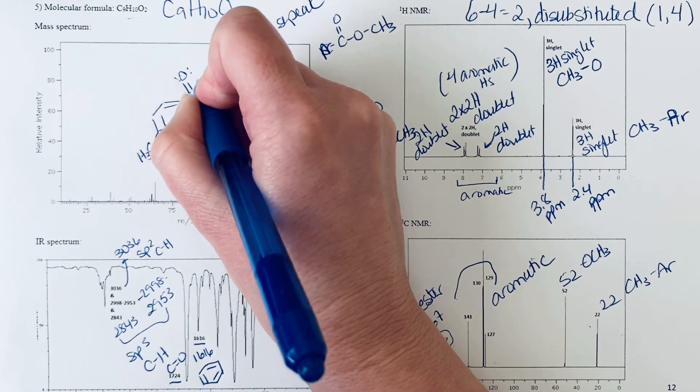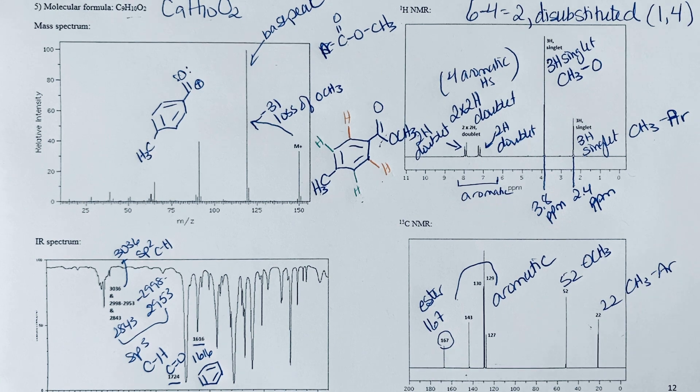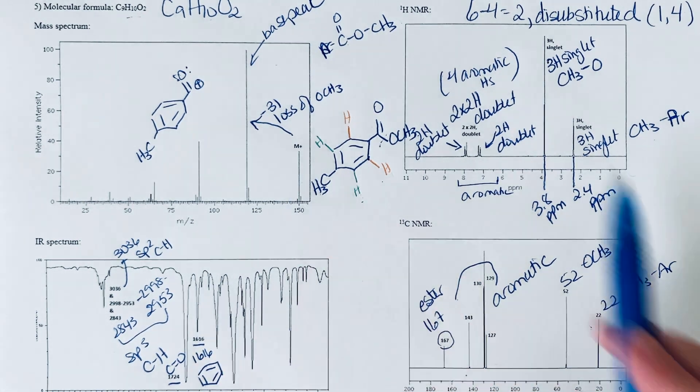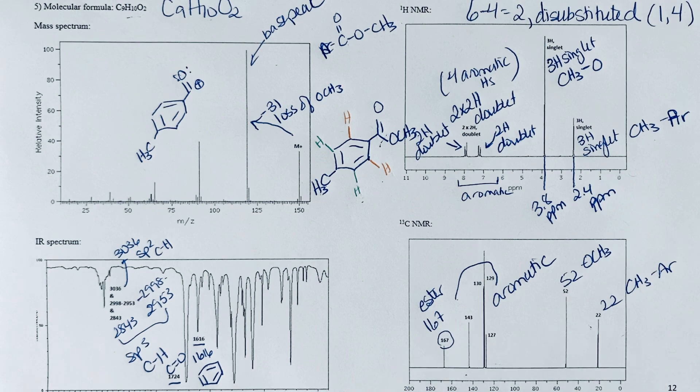We've seen this sort of alpha cleavage to a carbonyl quite frequently when we're looking at the mass spectrum. Now that we've gone through, we've checked all of the evidence, checked the molecular formula—everything is consistent. We can be fairly confident in proposing this structure for the unknown.